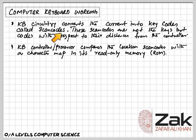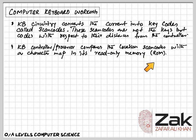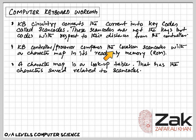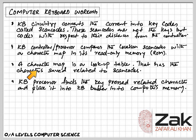The keyboard controller or processor compares the location of the scan code with a character map in its read-only memory. Every keyboard has a read-only memory containing all the scan codes along with their related keys. When a scan code arrives, it is compared with the related key in the character map. The character map is a lookup table that has characters saved and related to each scan code.